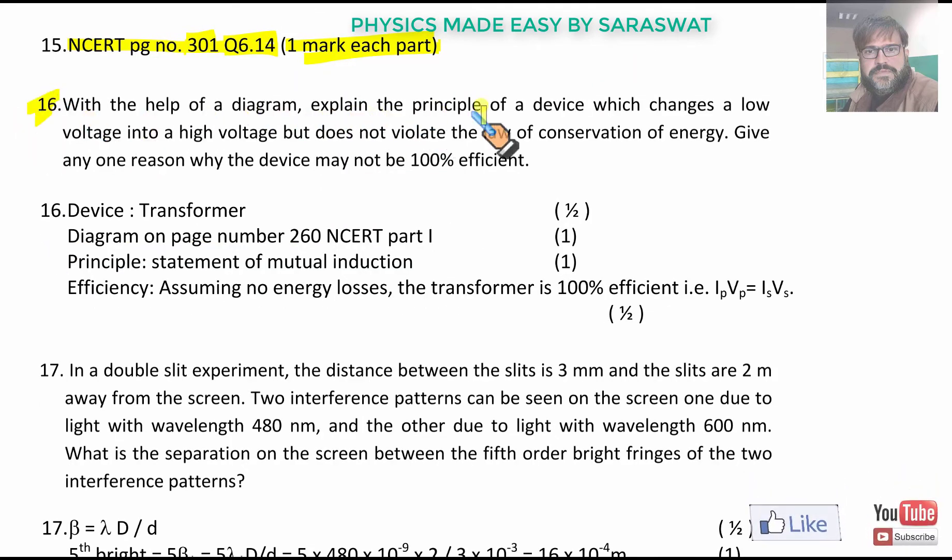With the help of a diagram explain the principle of a device which changes a low voltage into a high voltage. That is a transformer step up transformer. But does not violate the law of conservation of energy. Give any one reason why the device may not be 100% efficient. Because in real transformer we have energy losses. I am assuming no energy losses. The transformer is 100% efficient. That is power in primary is equal to power in secondary.